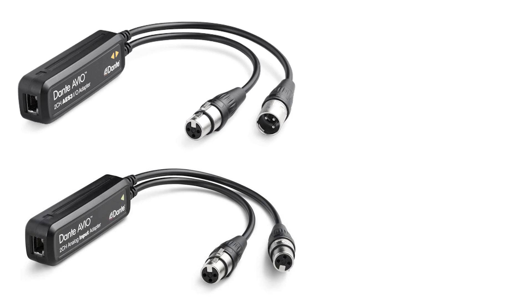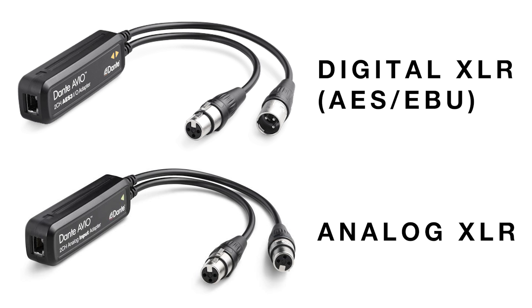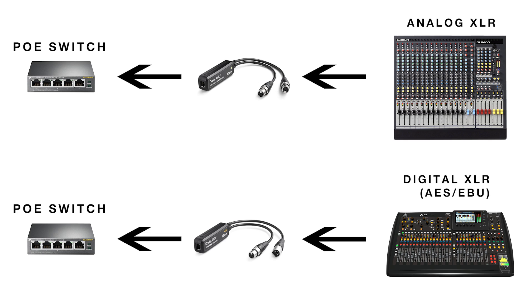Audinate, which is the company that created Dante, also makes a very inexpensive yet powerful line of adapters called Dante Avio adapters. These adapters can take either a stereo analog XLR output from your mixer or a digital AES-EBU connection via XLR like the one on the X32 and convert it to Dante. Simply plug it into an analog XLR or AES-EBU XLR connection and then plug it into a power-over-ethernet-enabled switch and your audio is now available anywhere on your network.